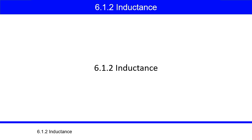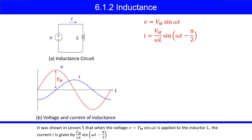Subsection 6.1.2, Inductance. It was shown in Lesson 5 that when the voltage V equals Vm sine omega T is applied to the inductance L, the current I is given by Vm over omega L, times sine omega T minus pi over 2.